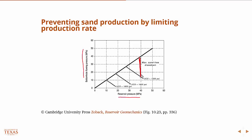Basically what you're looking at here is the difference between this line and — for a given reservoir pressure — the amount of drawdown you can have without producing sand. So it's basically this region: for an unconfined compressive strength of 1000 psi, if we have a reservoir pressure of 40 MPa, you can have a drawdown greater than 20 MPa. This distance here is greater than 20 MPa — between about 15 to 40, so about 25 MPa.